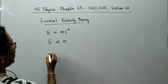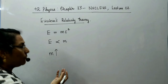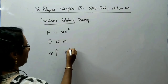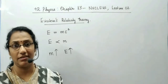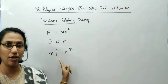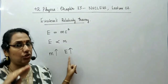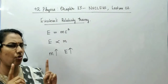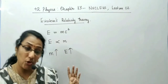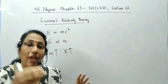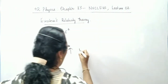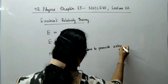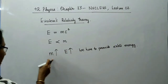What does this mean? If the mass of the body is increased, some extra energy has to be supplied to the body — energy is required to increase the mass of the body. When mass is increased, the energy of the body also increases. So in order to increase the mass, we have to provide extra energy to the body.